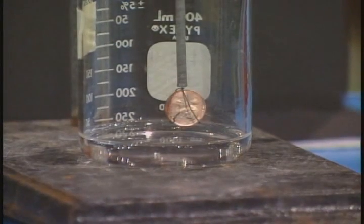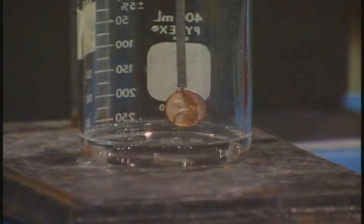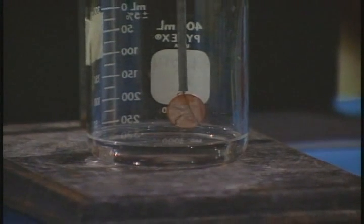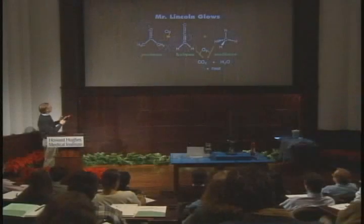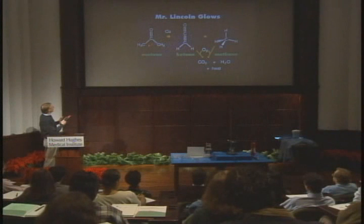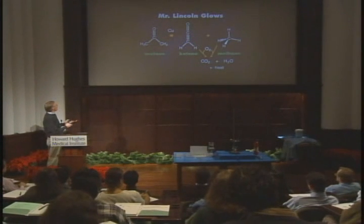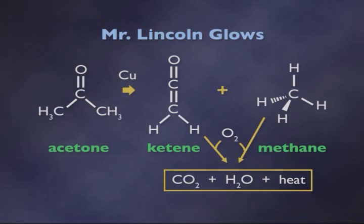So let's look at the reaction that's involved. In the presence of this metallic copper surface, the acetone molecules land on the copper surface, and that speeds up their breaking apart into two other organic molecules: ketene and methane.